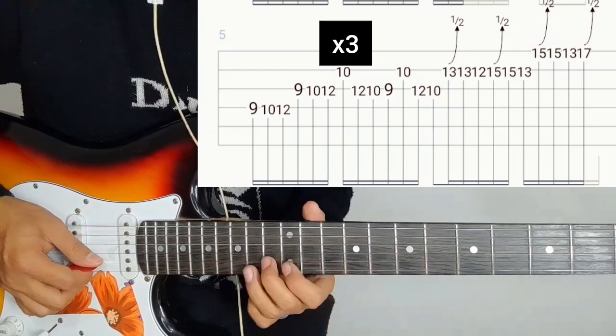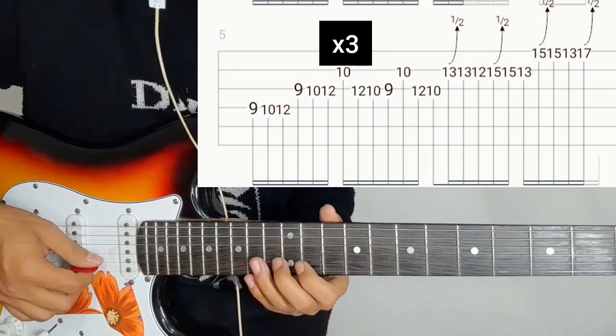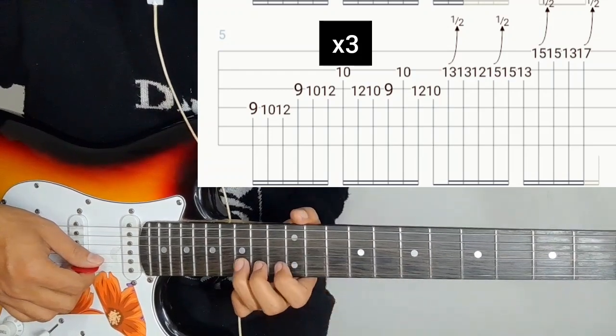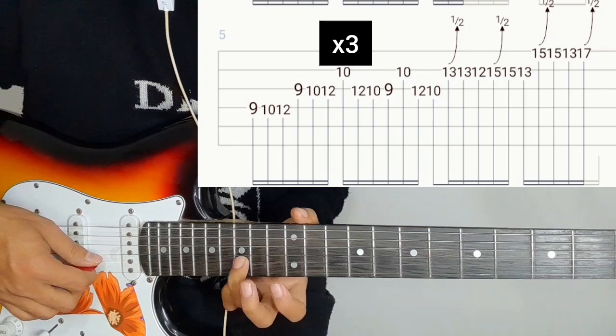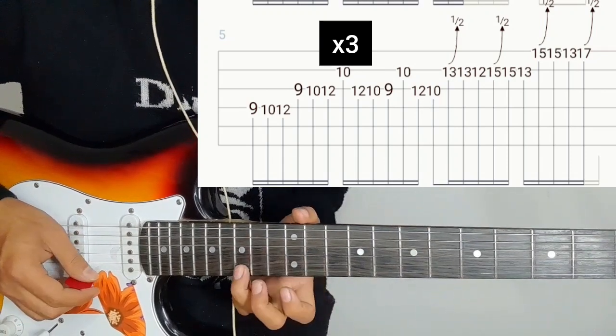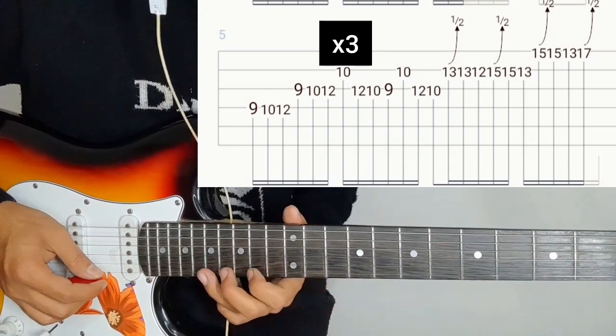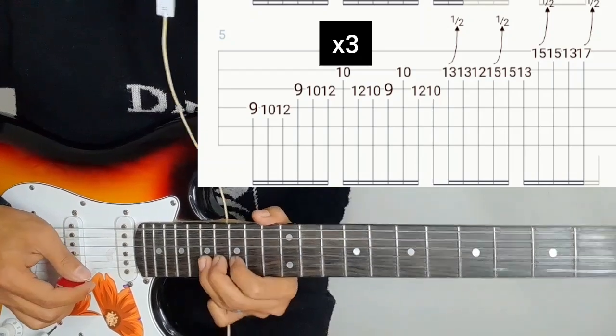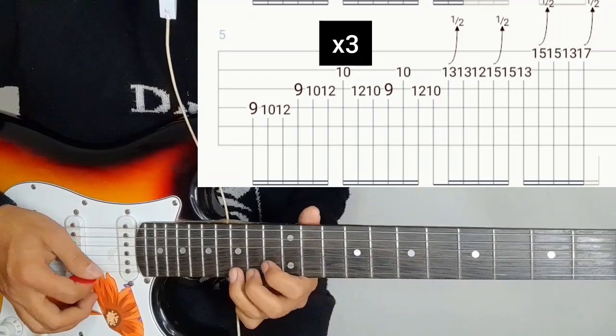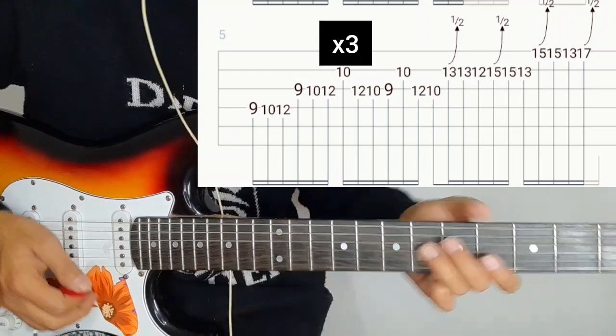Second string 13 with bending, 13-12. Second string 15 with bending, 15-13. First string 15 with bending, 15-13. First string 17 with bending. So this is the ending solo part, so that's the basics.